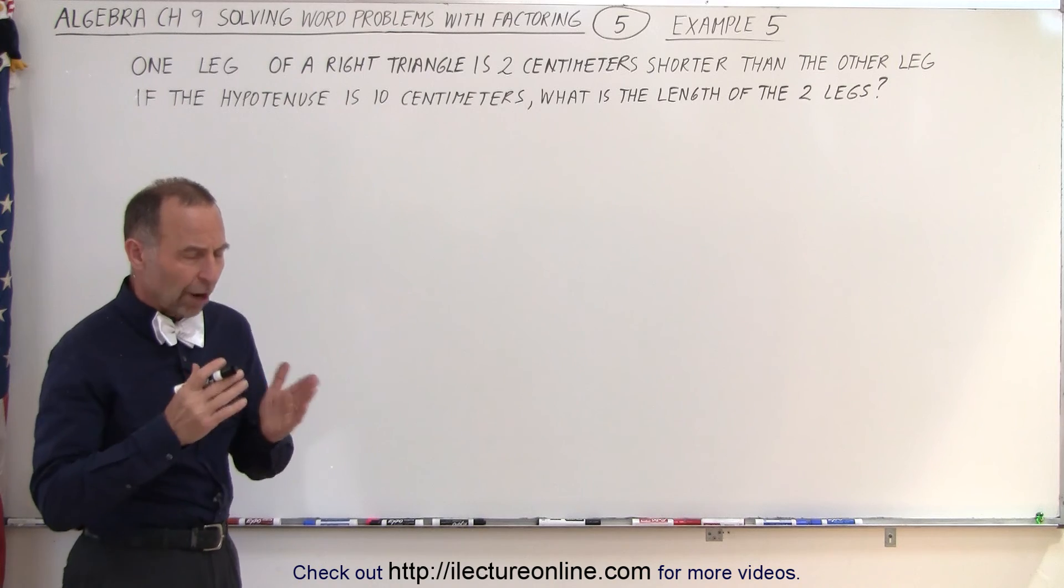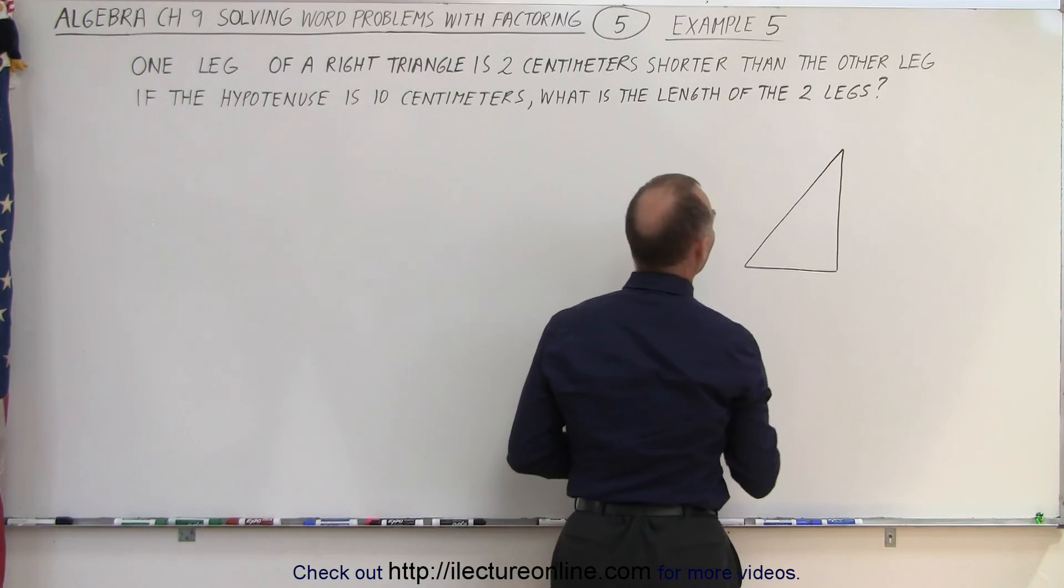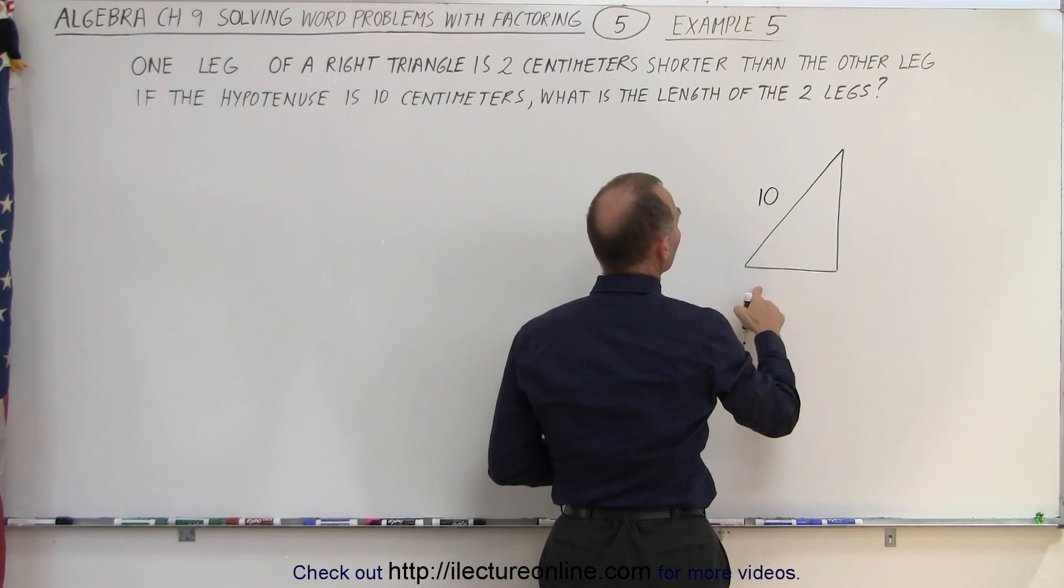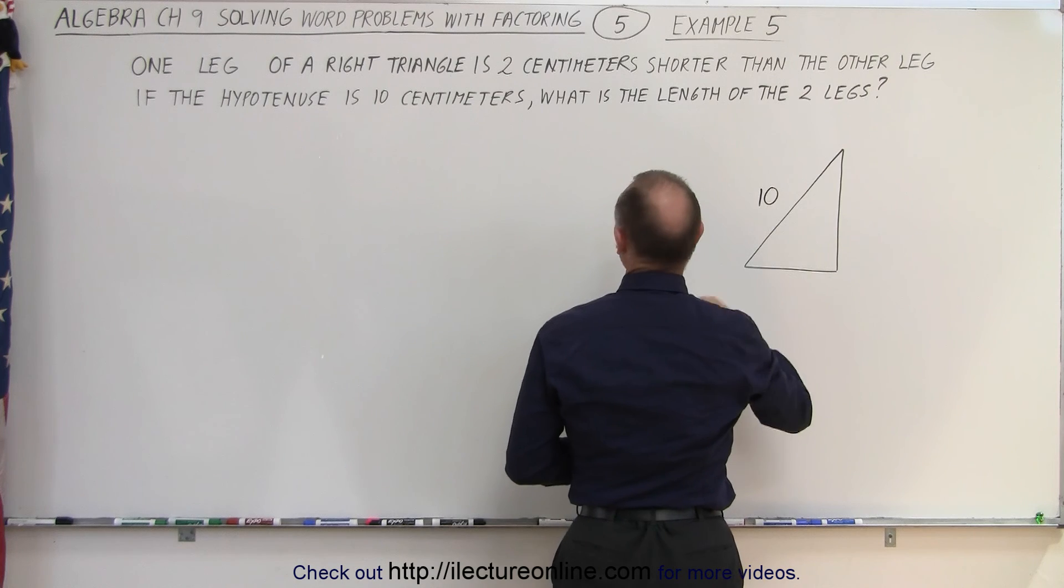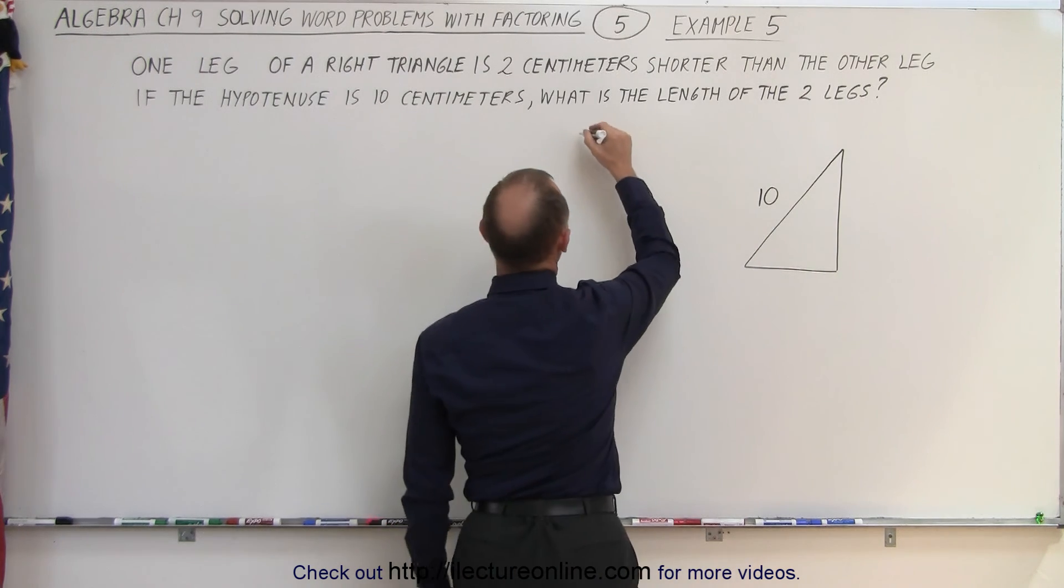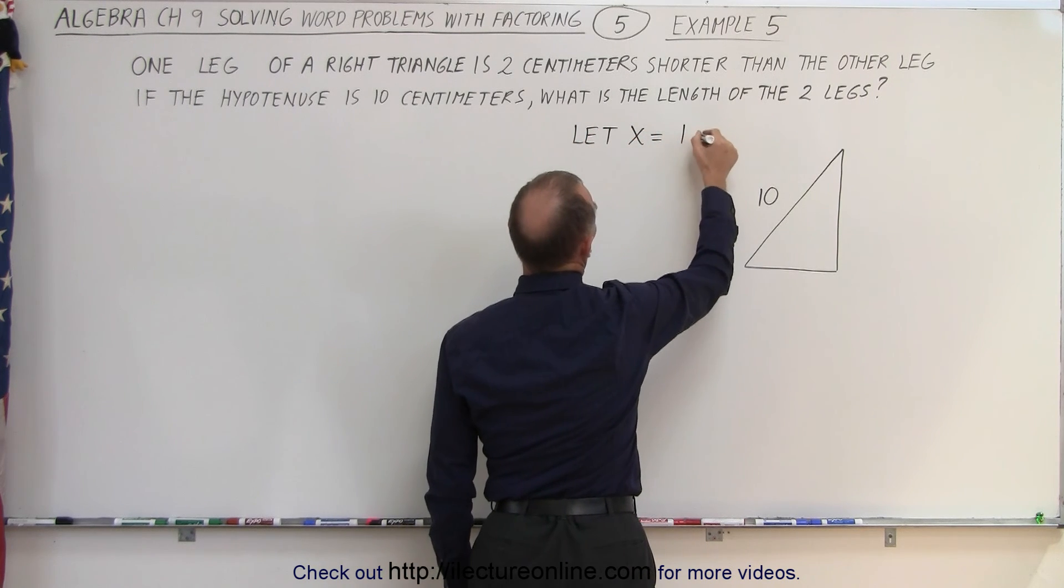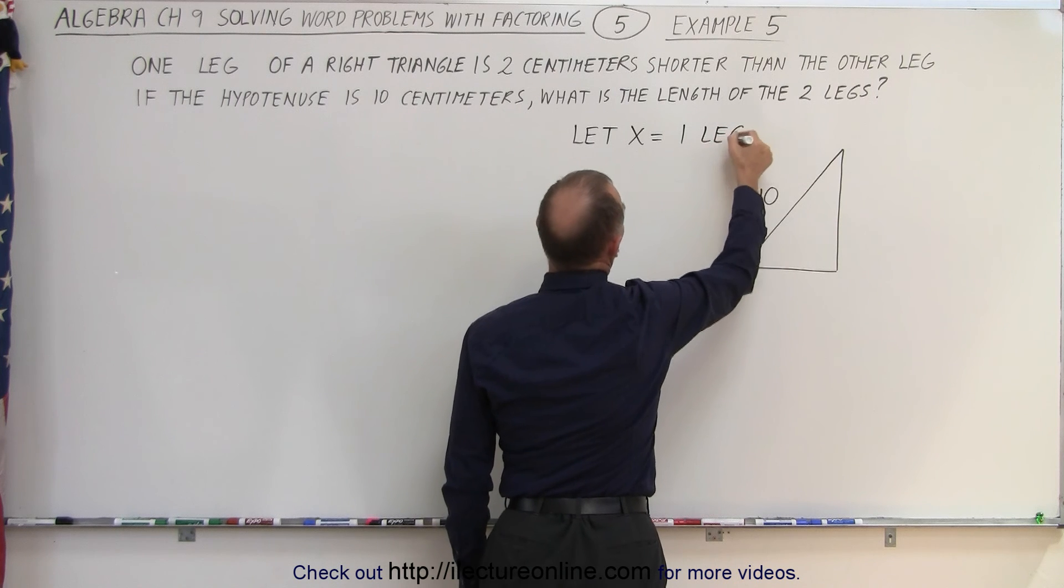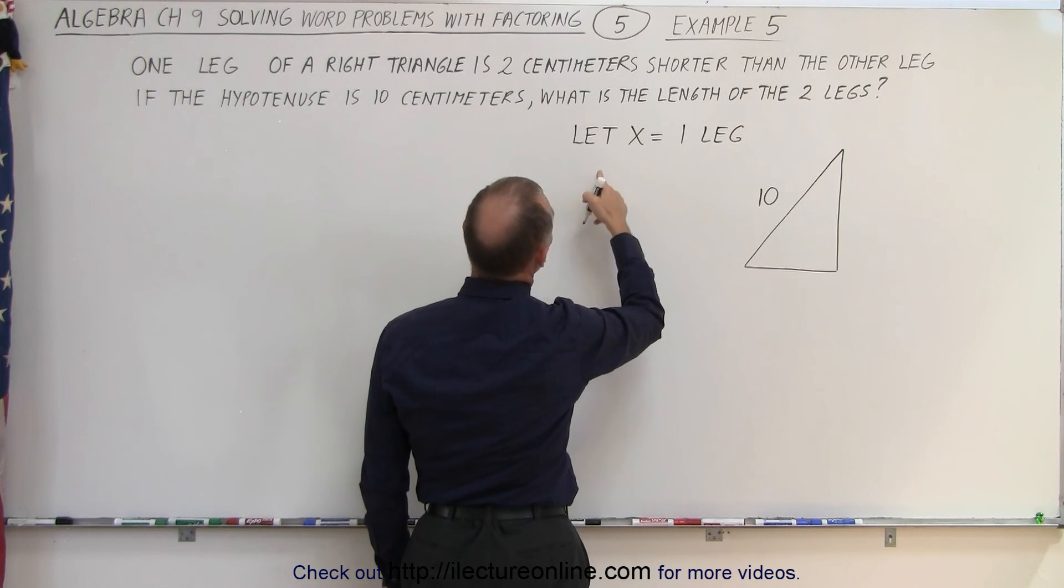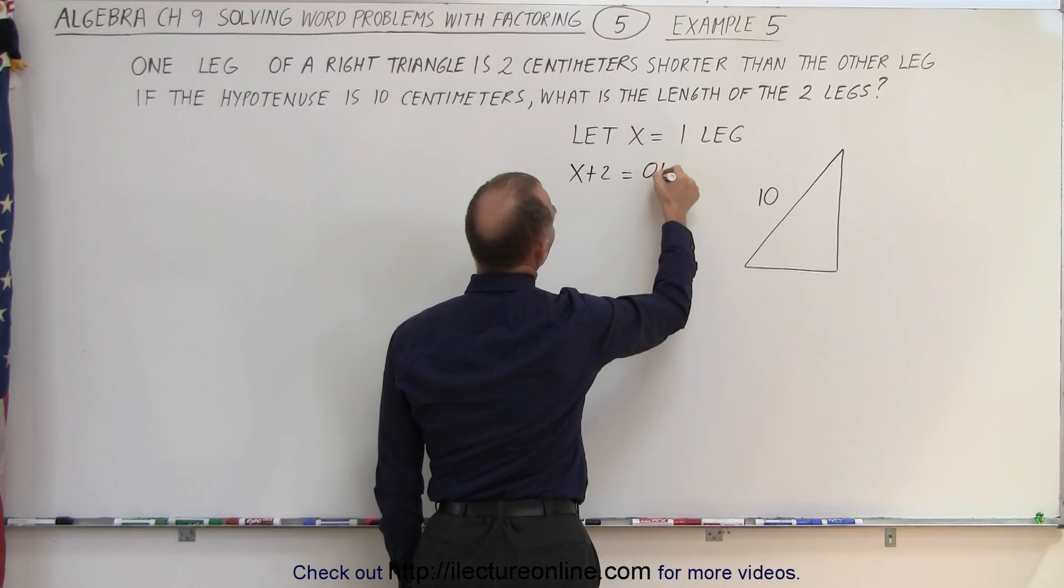It's always a good idea to draw the figure, so let's draw a right triangle. We're told that the hypotenuse is 10 centimeters and that one of the legs is two centimeters shorter than the other leg. So we can start with letting x be one of the legs. Then since that one is two centimeters shorter than the other one, then x plus two is the other leg.